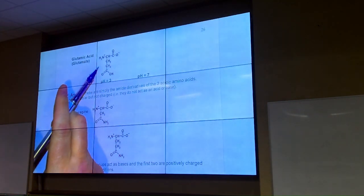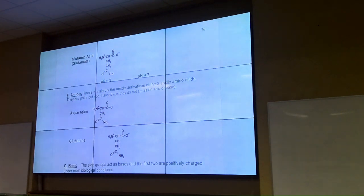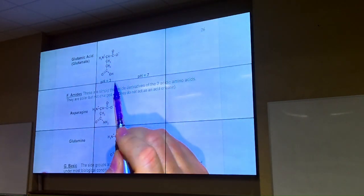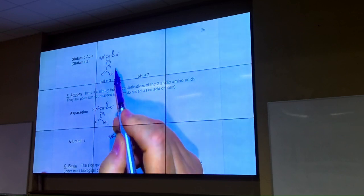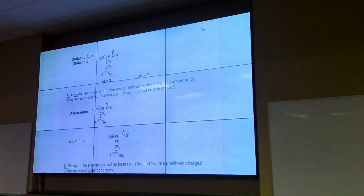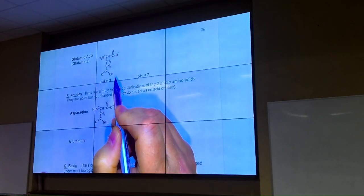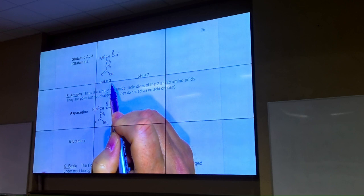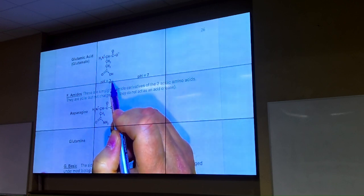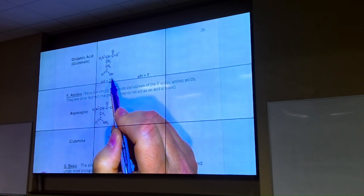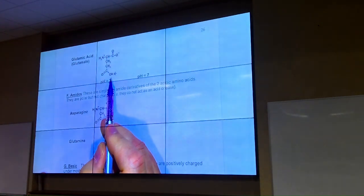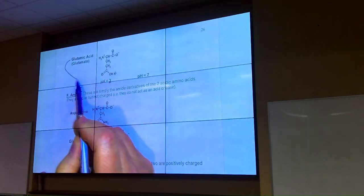We haven't really talked about glutamic acid in class. That was the next amino acid right at the top of page 26. A different way to show it is the same molecule. At acid pH, or at least mildly acid pH 3, we would have the proton on the side group — that would be the organic acid.